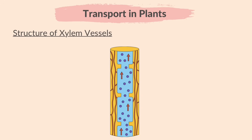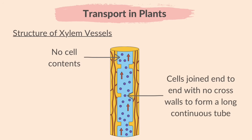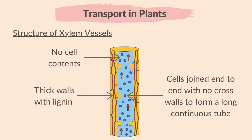So how does the structure of xylem vessels relate to their functions? The xylem tissues have no cell contents — that means there are no cell organelles. The cells are joined end-to-end with no cross walls in between, forming a long continuous tube. These structural adaptations allow the xylem to form an uninterrupted tube through which water can pass easily. The walls of xylem vessels are also thickened with a substance called lignin, which strengthens and supports the vessels and stops them collapsing inwards.